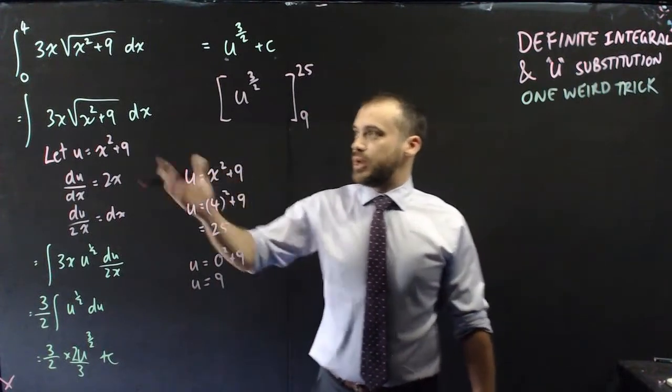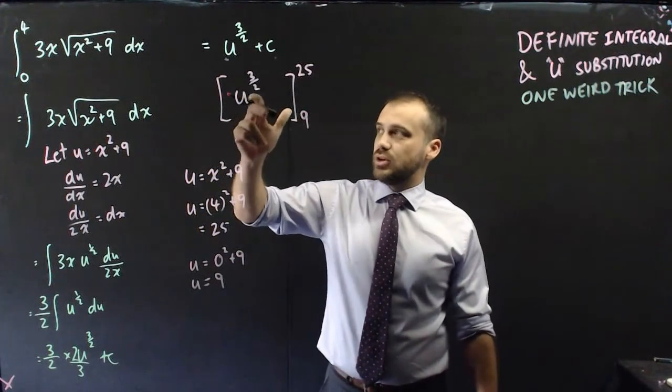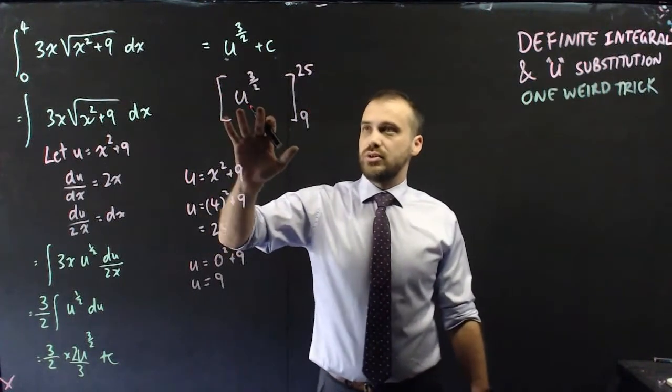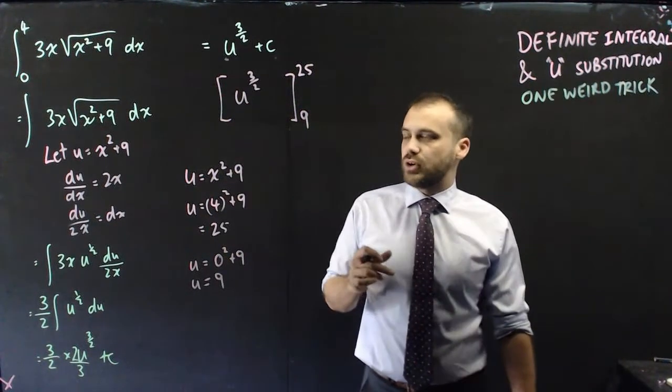And now what I can do is, instead of putting in that x squared plus 9 and then going between 4 and 0, I can leave it in terms of u and I can go between 25 and 9.